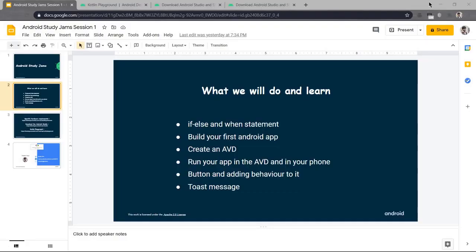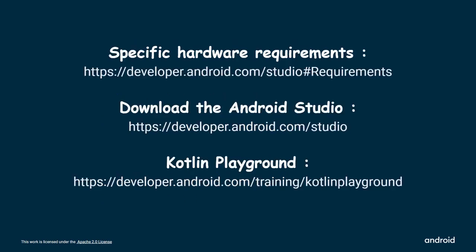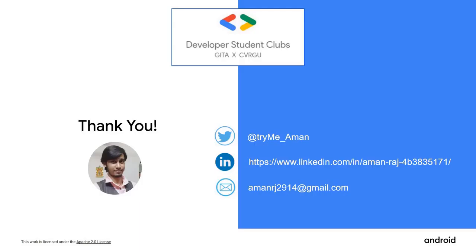So now we are done with all these things. We have the idea about the if/else statement and the when statement, how to run an app, and we also learned about toast messages. Here are some links for the specific hardware requirements to install Android Studio, and the link for the if/else and when statement documentation. Thank you guys, thank you so much.